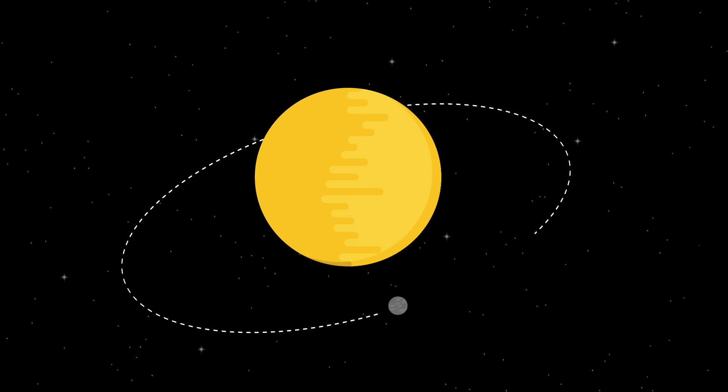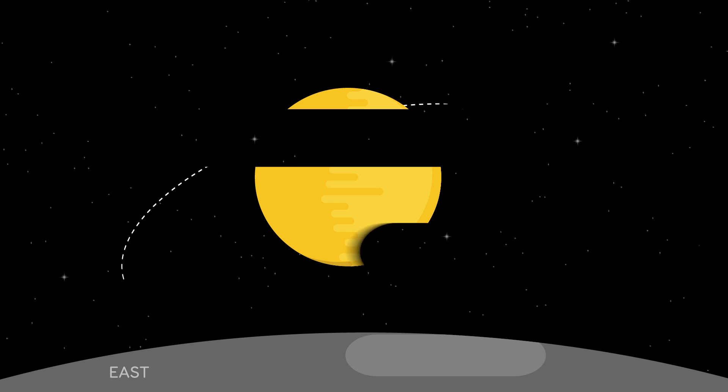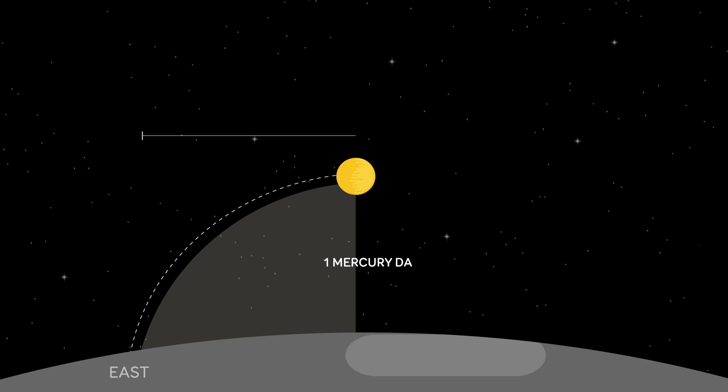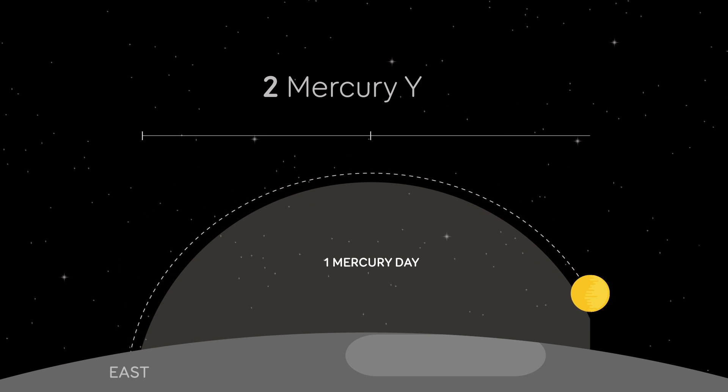Bizarrely, that means one sunrise to the next on Mercury takes exactly two of its years. It's a pretty strange place.